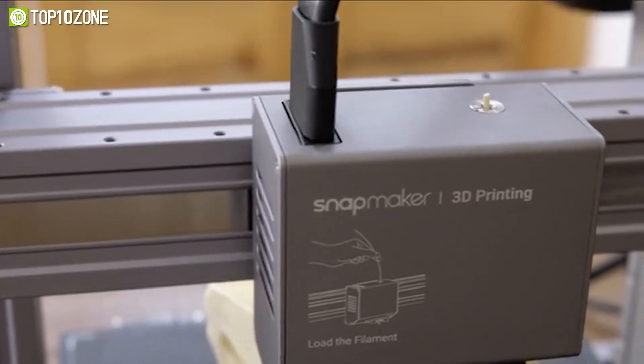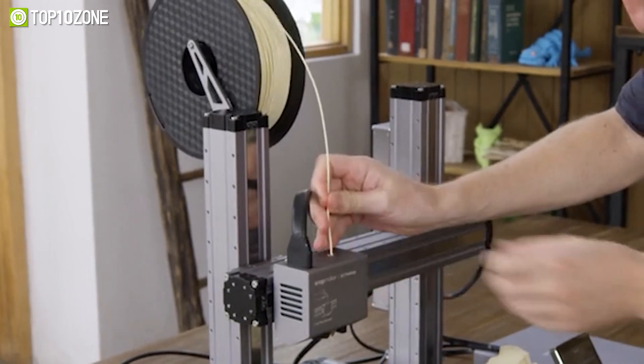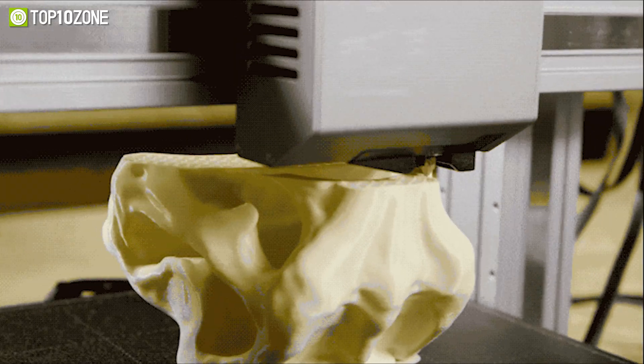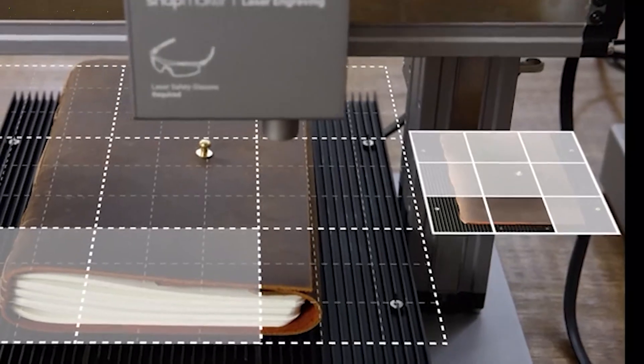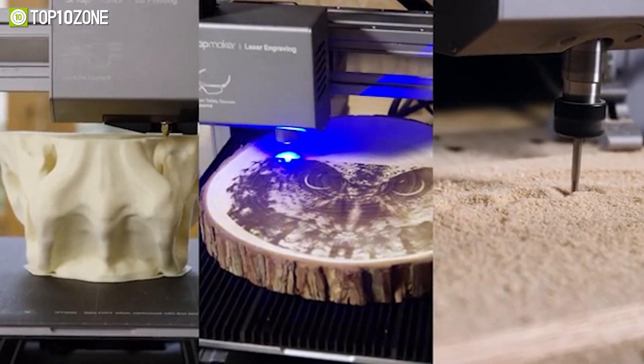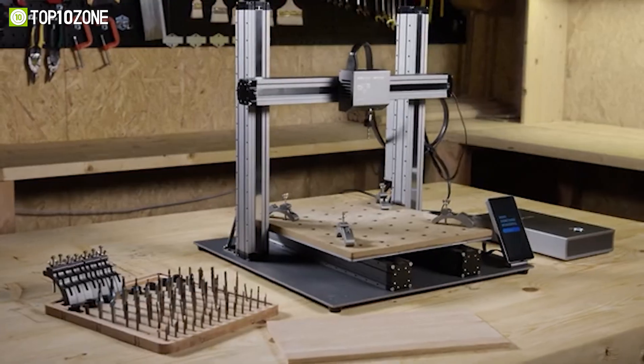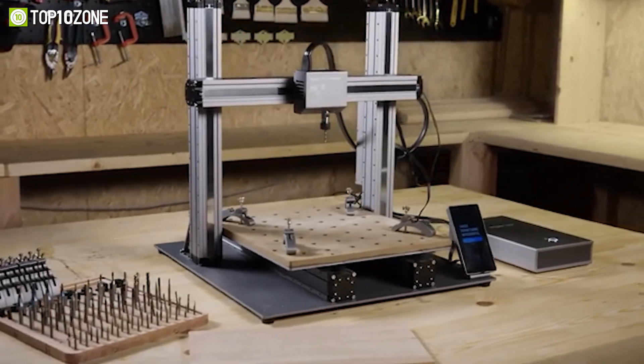And you can even use it as a CNC router to create precision 2.5D and 3D objects. You won't be limited with the options of plastic or soft materials. You can also use materials like hardwood, PCB, carbon fiber sheets, and many more for your creative projects.